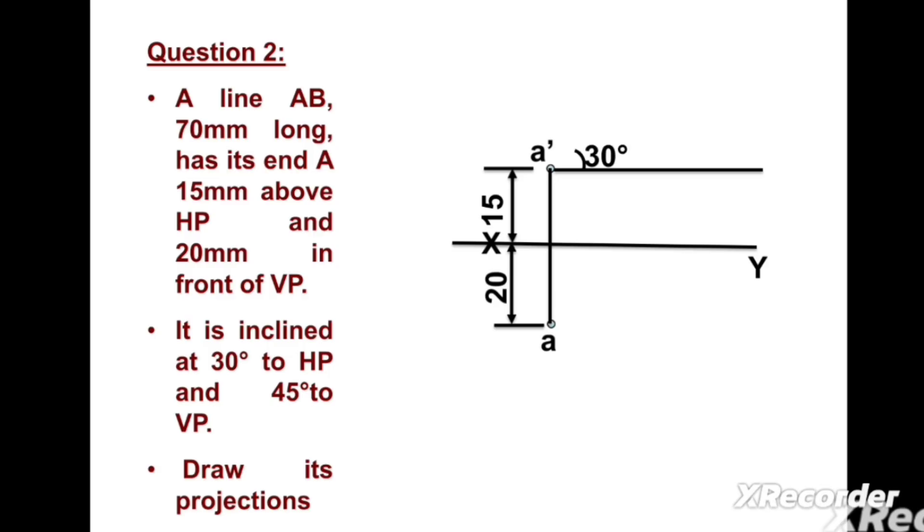We can draw one line having length 70mm. This is line a' b1'.